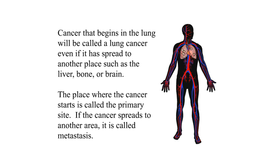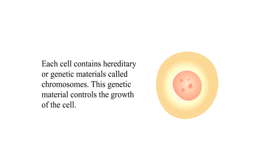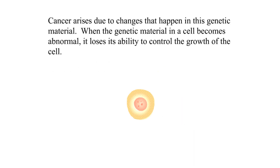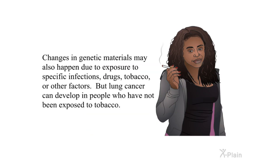Cancers in the body are given names depending on where the cancer started. Cancer that begins in the lung will be called lung cancer, even if it has spread to another place such as the liver, bone, or brain. The place where the cancer starts is called the primary site. If the cancer spreads to another area, it is called metastasis. Each cell contains hereditary or genetic materials called chromosomes, which control the growth of the cell. Cancer arises due to changes in this genetic material. When the genetic material in a cell becomes abnormal, it loses its ability to control the growth of the cell. Changes in genetic material may also happen due to exposure to specific infections, drugs, tobacco, or other factors, but lung cancer can develop in people who have not been exposed to tobacco.